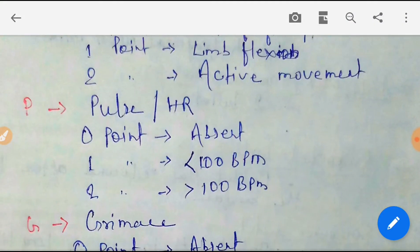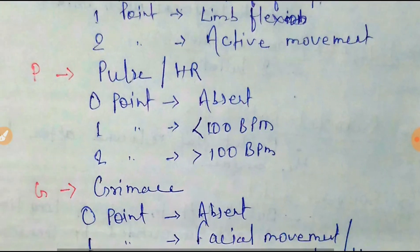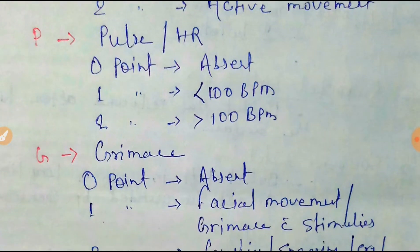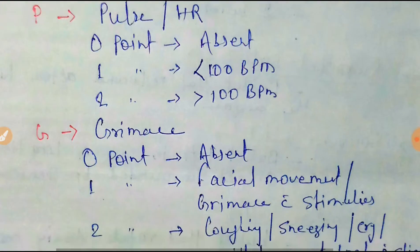P is indicative of Pulse or heart rate. 0 indicates absent heart rate, 1 point means less than 100 beats per minute, and 2 points indicates more than 100 beats per minute.